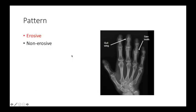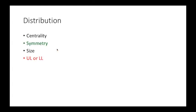We determine whether we have an erosive pattern — which is destruction of the joints — or a non-erosive arthritis. When we think of erosive patterns, we try and figure out rheumatoid arthritis, psoriasis, gout, or systemic sclerosis.